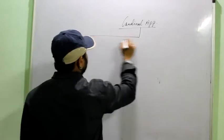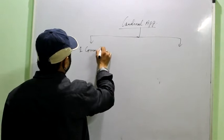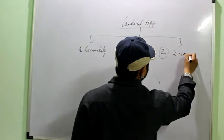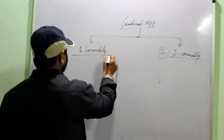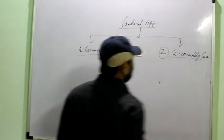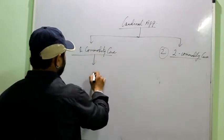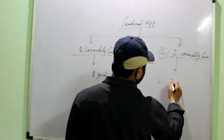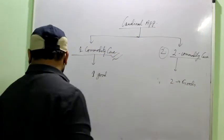Cardinal approach basically has two cases: one commodity case and two commodity case. Under one commodity we assume that the consumer is consuming only one good, while here we assume that the consumer is consuming two goods. So first we will study the one commodity case.